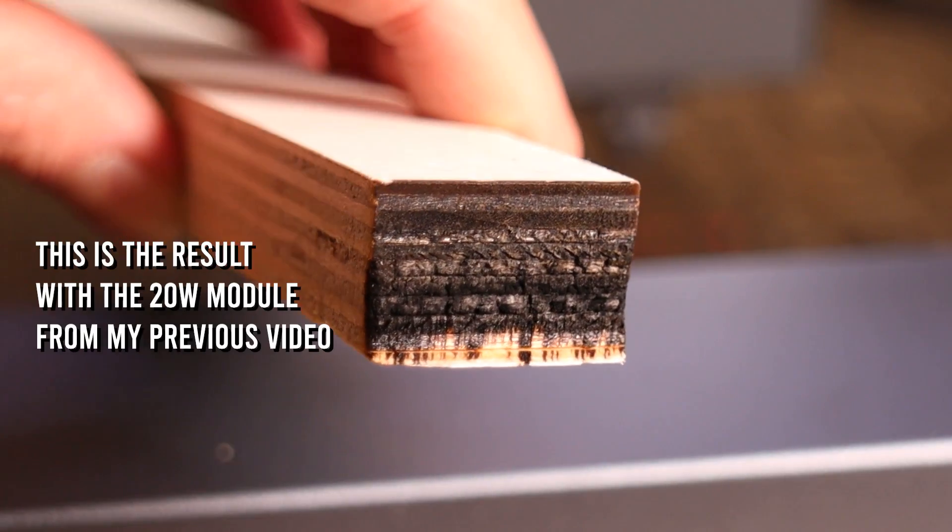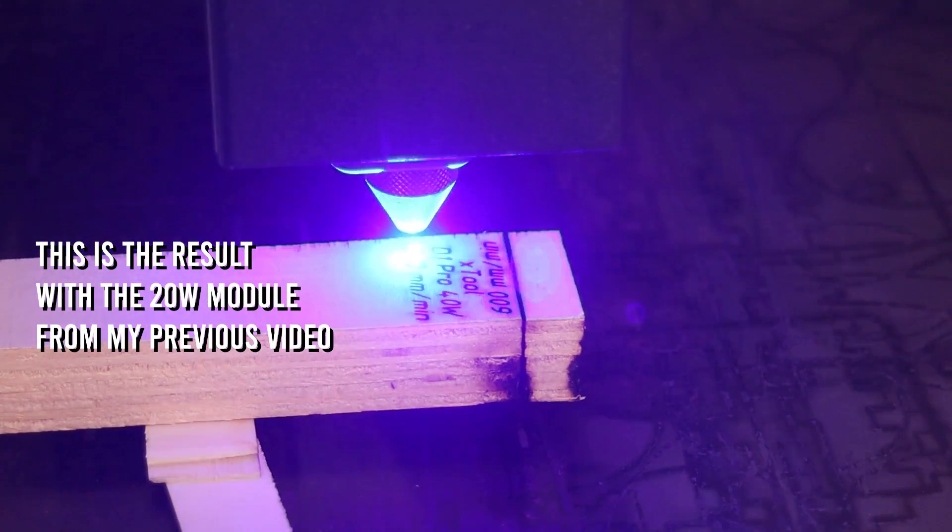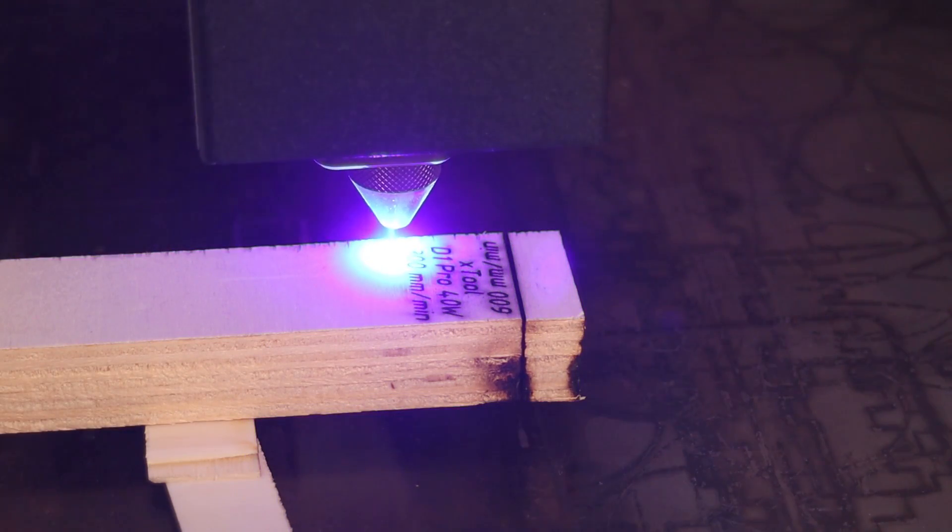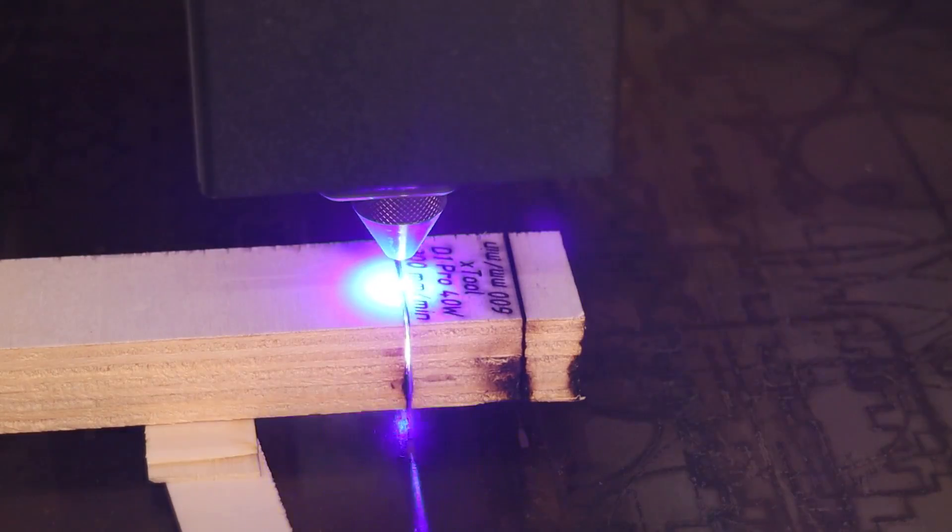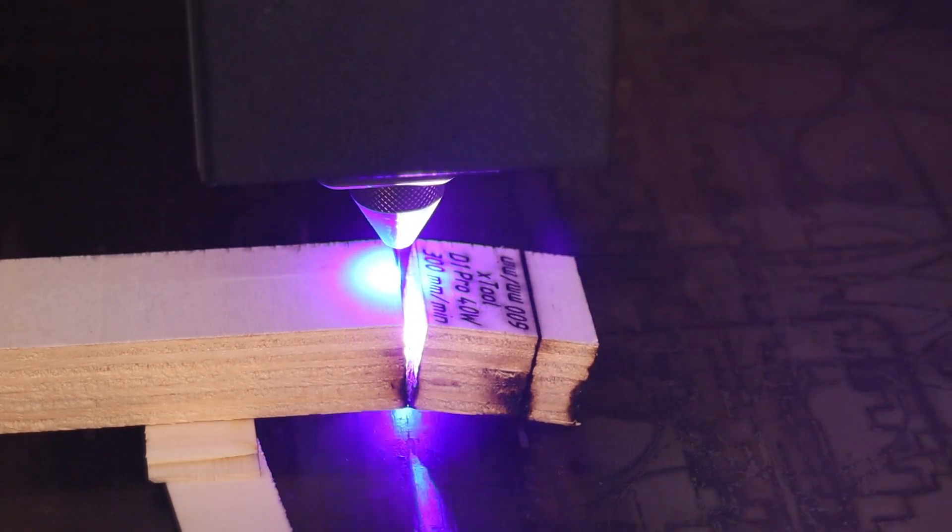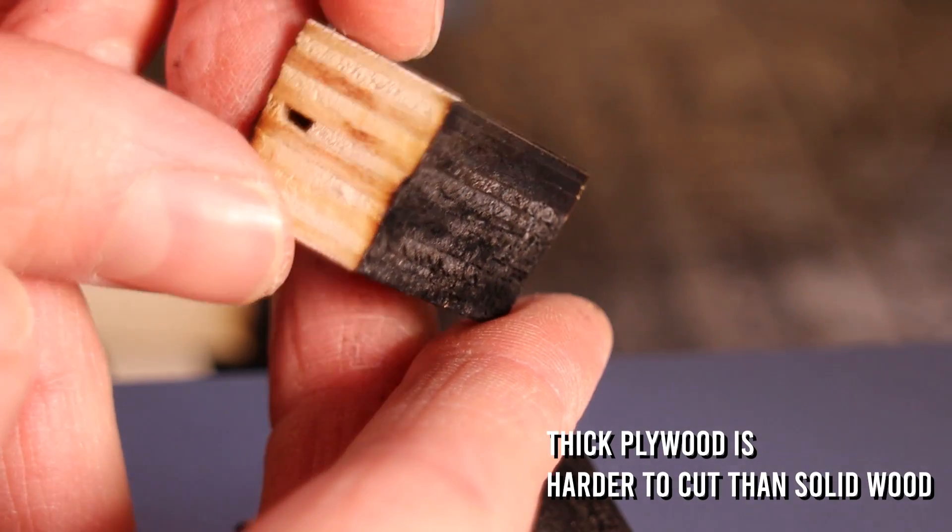Next, I tried cutting 18mm thick poplar plywood which the 20W D1 module wasn't able to cut. It was able to cut it in 6 passes at 300mm per minute. The problem with plywood this thick is that it contains many layers of glue which is hard to cut.